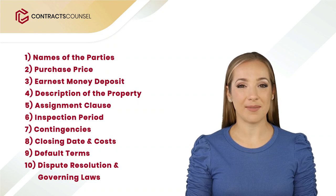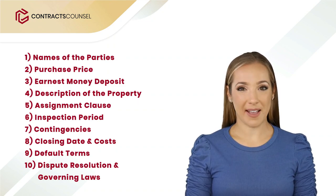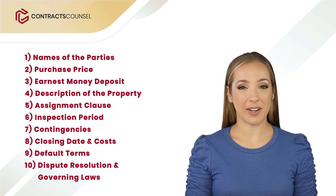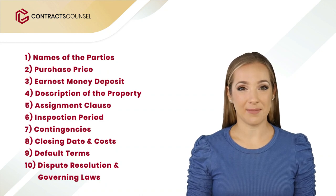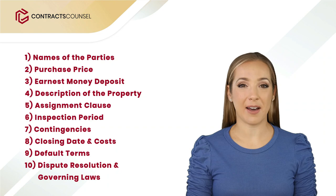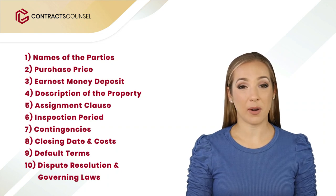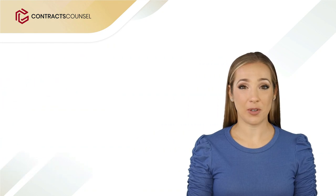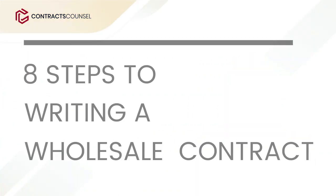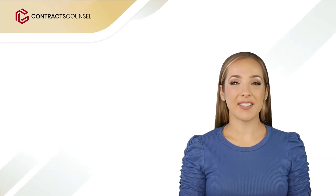Eight, closing date and costs — this section specifies when the transaction will be finalized and who will pay for closing costs. Nine, default terms — specify what happens if either party does not fulfill their obligations as stated in the contract. Ten, dispute resolution and governing laws — this outlines the procedure for how the parties can handle a dispute and what state laws will be used to interpret the contract.